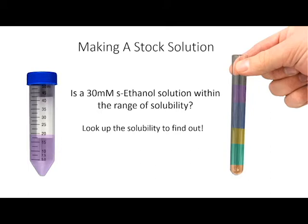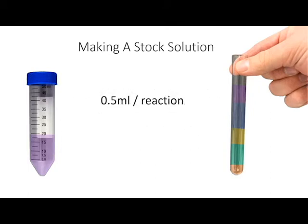Lastly, you'll need to figure out how much of this stock to make. In our example, we said the V1 was 0.5 mils. That means each reaction tube gets a half a mil. So if you have 40 reaction tubes that need ethanol, you would need 20 mils of 30 millimolar stock.